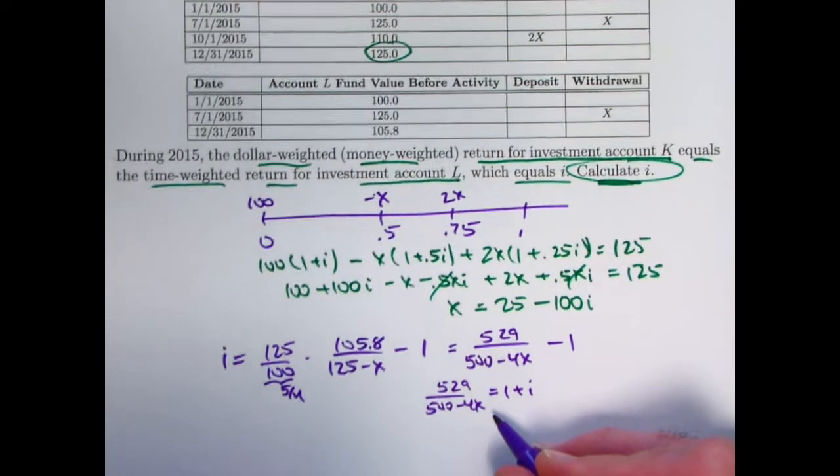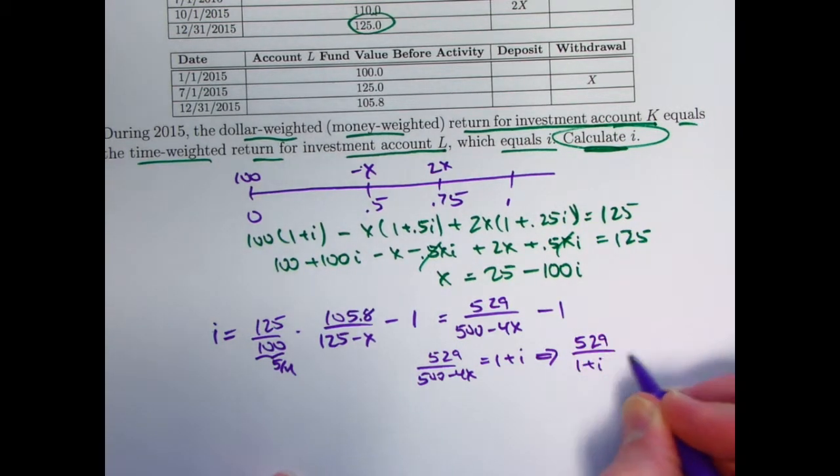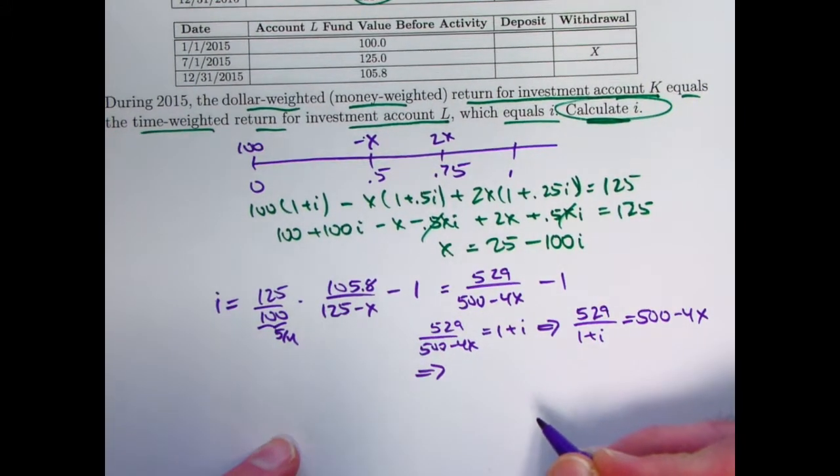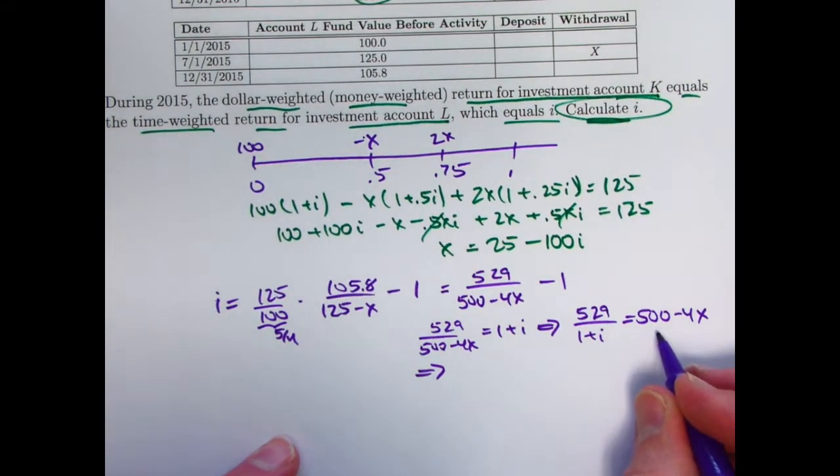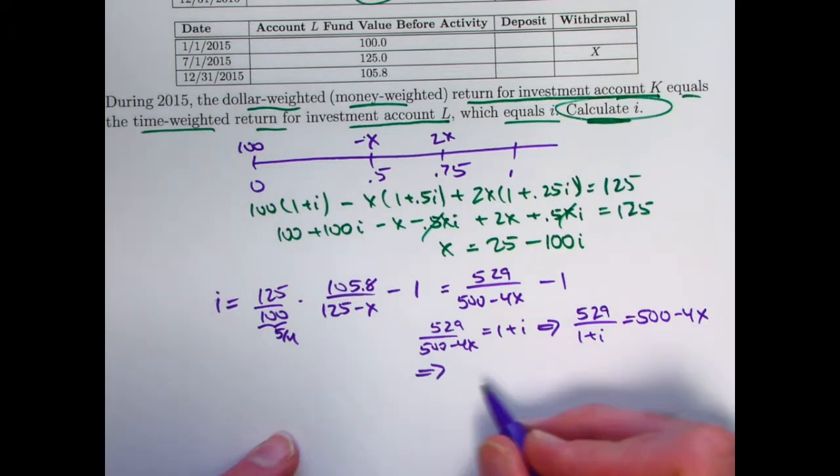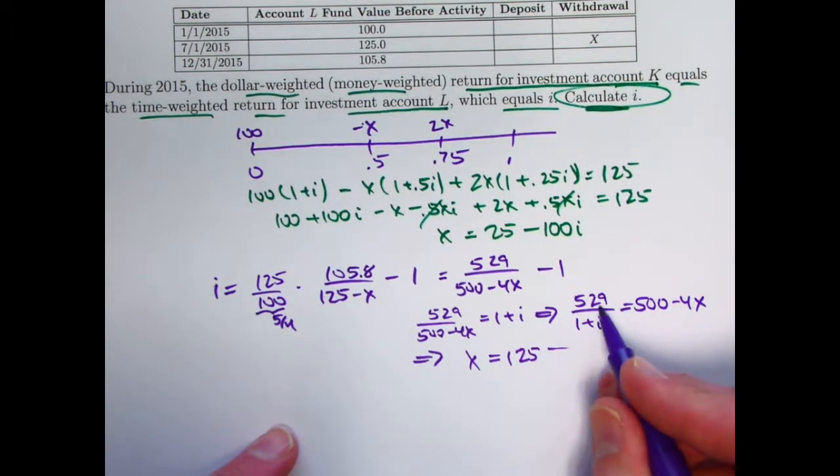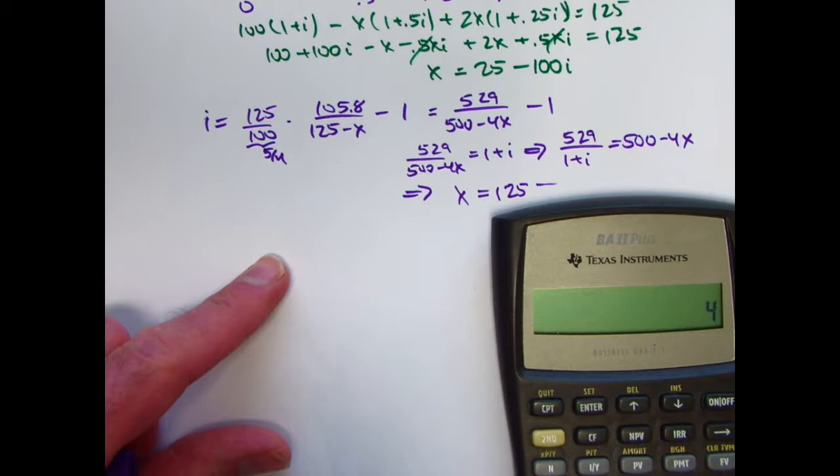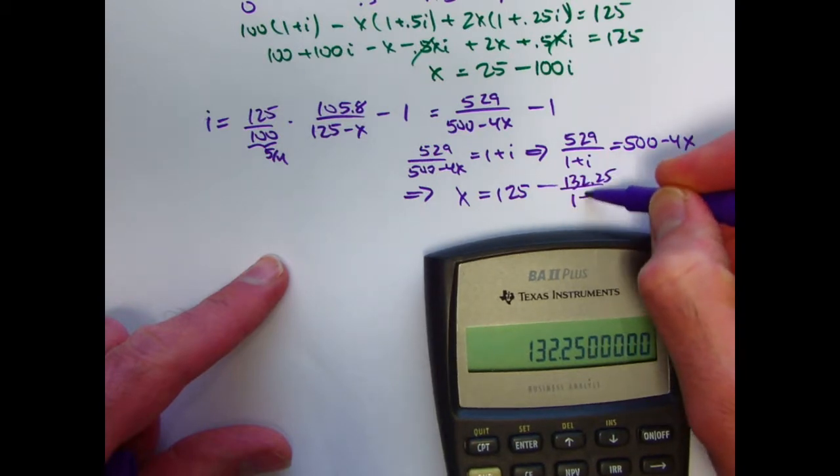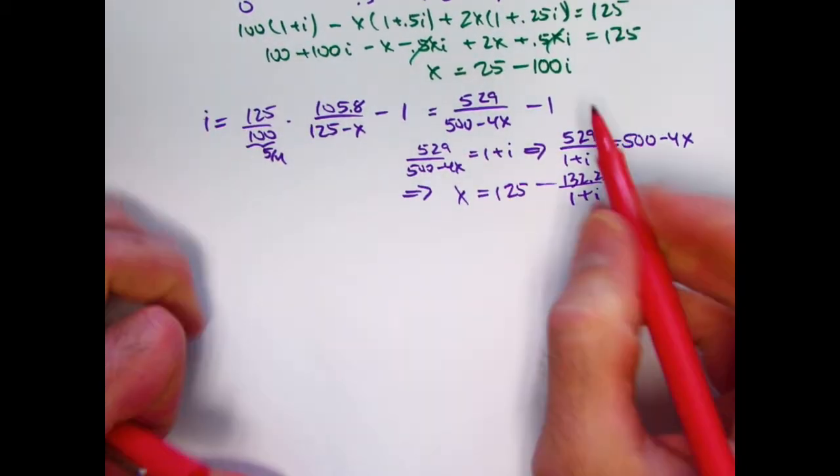So this becomes 529 over 4 times 125 is 500 minus 4x minus 1. Add 1 to both sides. 529 over 500 minus 4x equals 1 plus i. My goal is to solve for x. I can multiply both sides by 500 minus 4x and divide both sides by 1 plus i. 529 over 1 plus i will equal 500 minus 4x. I can then add 4x to both sides. Subtract 500 from both sides and then divide everything by negative 4. 500 divided by negative 4 is going to be positive 125. And then I'll divide this thing by negative 4. 529 divided by 4 is 132.25. So I'll get negative 132.25 over 1 plus i after dividing everything by negative 4.